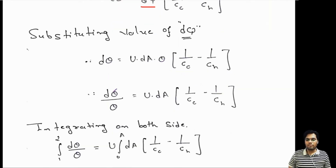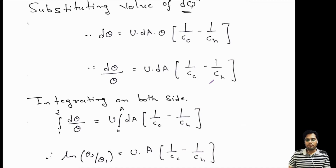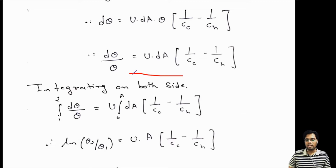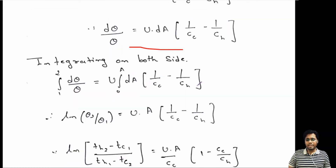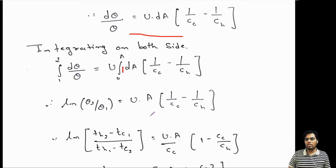To get the equation for the whole heat exchanger, we integrate. For theta, the limits are the inlet and outlet conditions: subscript 1 for inlet and 2 for outlet. For area, the limits are 0 to A. Integrating, 1/theta integrates to ln(theta), giving ln(theta2/theta1) on the left side, and UA·(1/CC - 1/CH) on the right side.